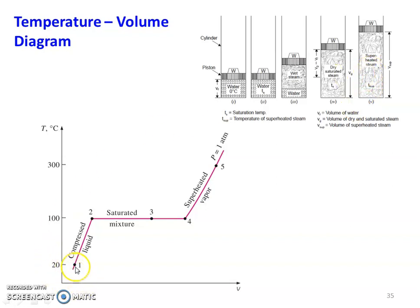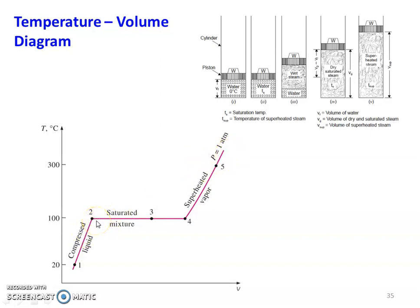Water is available at roughly 20°C. When heat is added, the water temperature increases and reaches 100°C along a pressure line at 1 atmosphere. At point 2, it is known as the saturation temperature — 1 bar, 100°C is the saturation temperature. Adding further heat, it becomes wet steam; evaporation begins. The process from 2 to 4 is the evaporation process. Point 3 is the wet steam, point 2 is the saturated liquid, and point 4 is the saturated vapor.